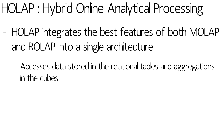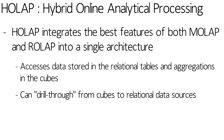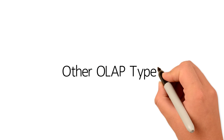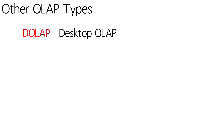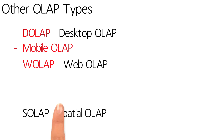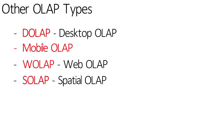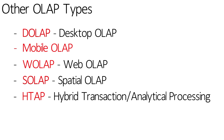Hybrid OLAP, or HOLAP, integrates the best features of both ROLAP and MOLAP into a single architecture. HOLAP systems can access huge amounts of data from relational tables and the aggregations stored in pre-calculated cubes. It also has the added advantage of drill-through from cubes back to the relational data sources. Some of the other types of OLAP systems you may come across are Desktop OLAP, Mobile OLAP, Web OLAP, Spatial OLAP, and Hybrid Transaction Analytical Processing.